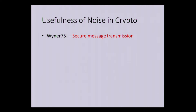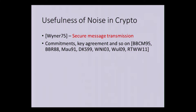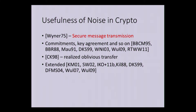Typically, noise is something that's seen as a problem in information theory and so on. But over the years, we've seen that noise can actually be a very useful tool in enabling very good secure computation solutions. In particular, Wiener in 1975 showed that you could use noise for secure message transmission, and subsequently a lot of work has gone into realizing richer cryptographic primitives — commitment, key agreement, and so on. Crépeau and Killian showed that one can use noise and communication channels to realize oblivious transfer, which can then be used to realize secure computation for arbitrary functionalities, and this is extended in multiple ways using different kinds of noisy channels.